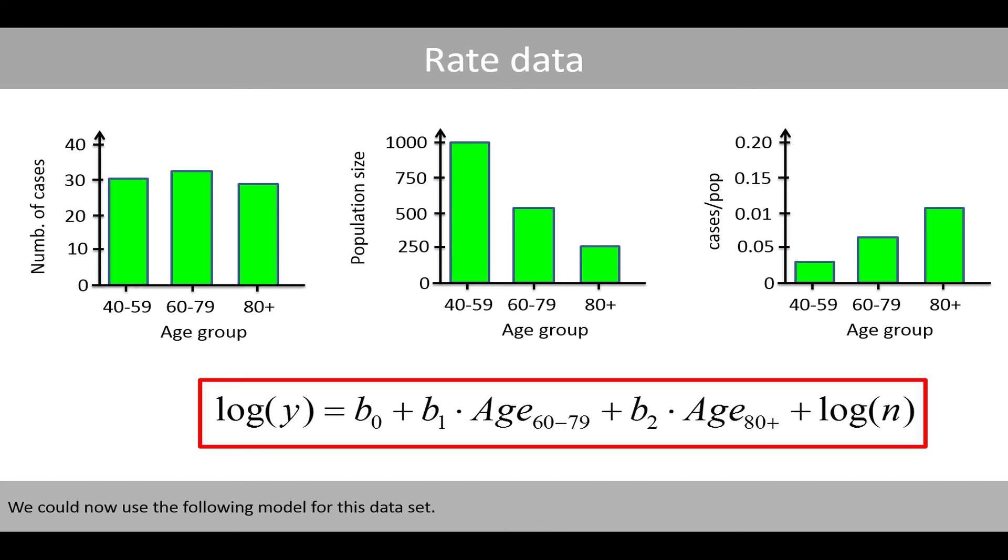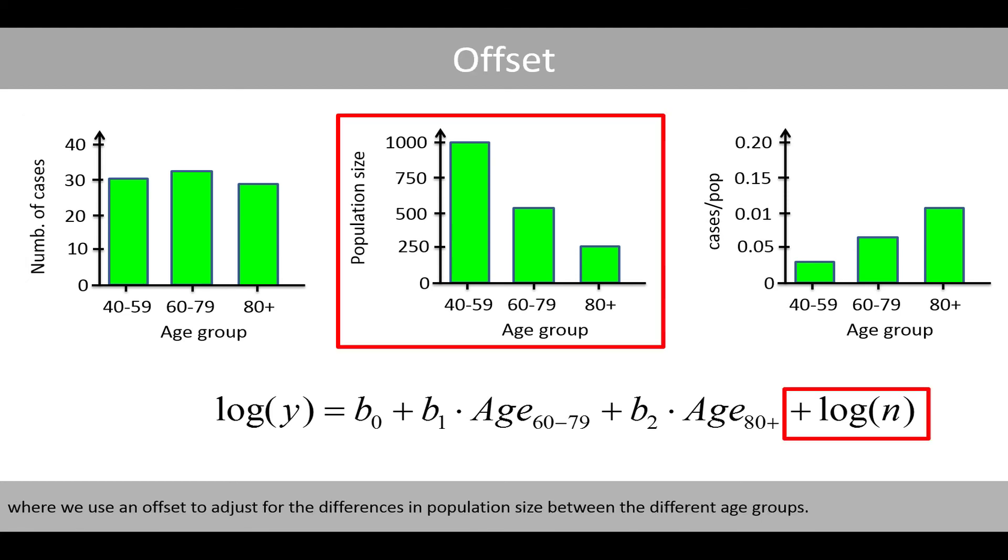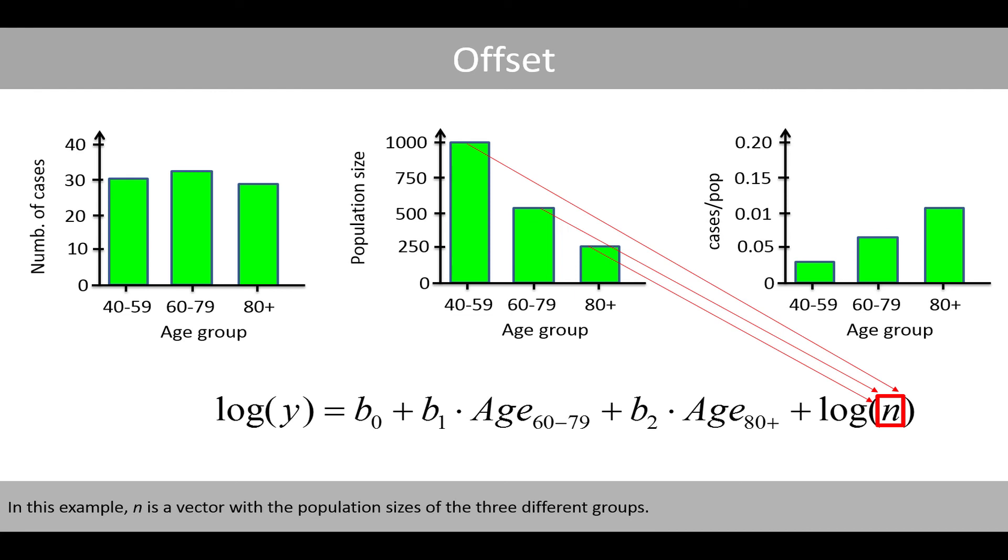We could now use the following model for this data set. We fit this model to the number of cancer cases, where we use an offset to adjust for the differences in population size between the different age groups. In this example, n is a vector with the population sizes of the three different groups.